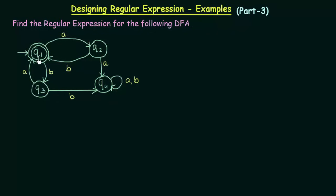Here we see that we have states Q1, Q2, Q3 and Q4, where Q1 is the initial as well as the final state, and we have inputs A and B.